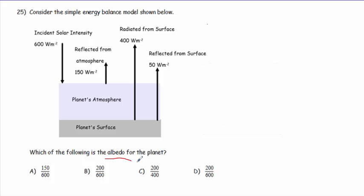So we want the albedo for the planet. That includes both the surface and the atmosphere itself. So we're looking for the fraction that is reflected from either the surface or from the atmosphere. So we've got to have 150 plus 50, that would be 200 out of the 600 that's coming in. So the correct answer here would be B.